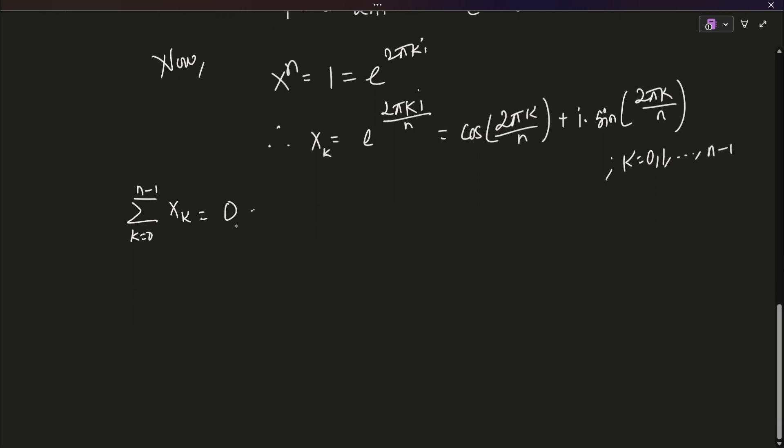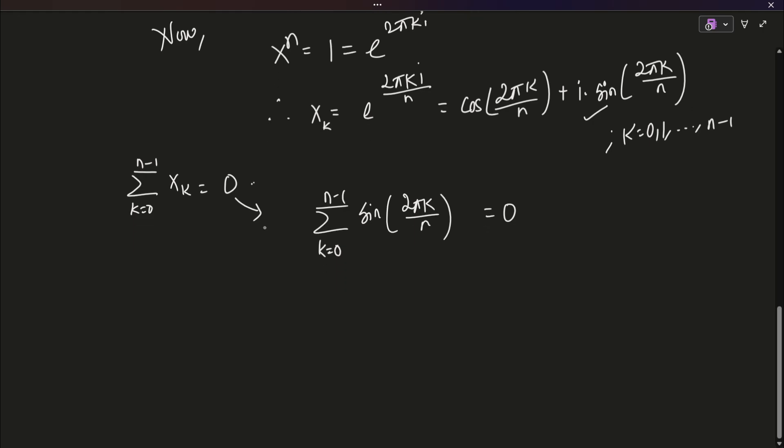Using this a lot of sums like sin 2 pi k by n and stuff can be found. For example, for instance, from this identity, we can directly compare, put this value and compare the imaginary part to directly get that k equals to 0 to n minus 1 sin of 2 pi k by n is equals to 0. This type of identities can be easily derived using nth roots of unity.